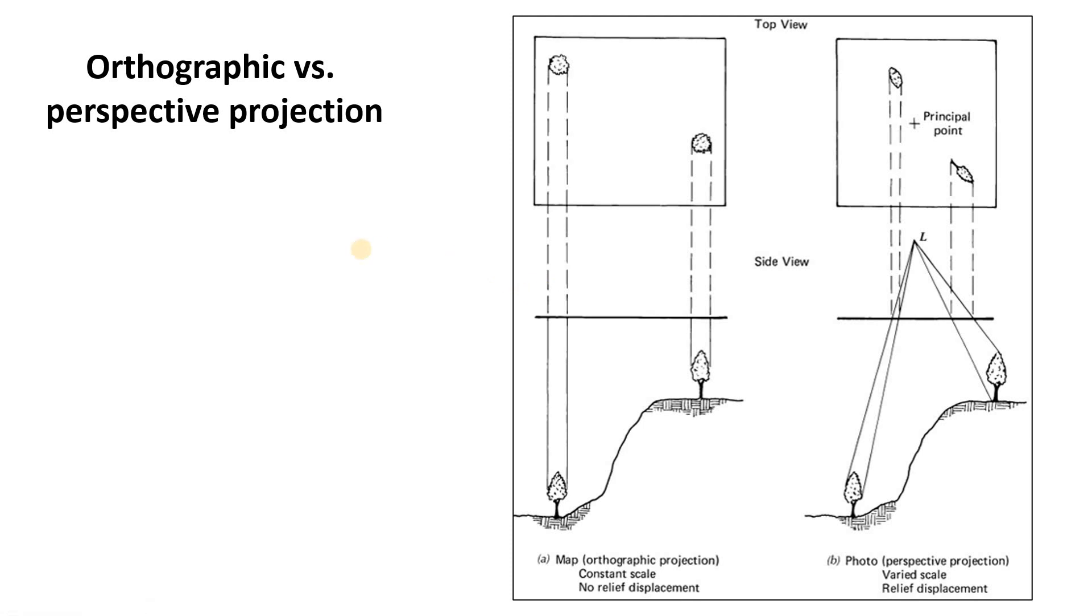The goal of orthorectification is we want to take a map that has this type of scale distortion and actually warp it or change it, rearrange the pixels so that you preserve that pixel information, you preserve the picture, but it has a constant scale throughout the image.